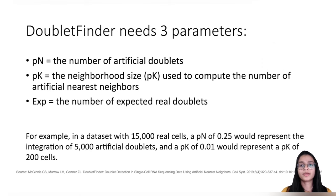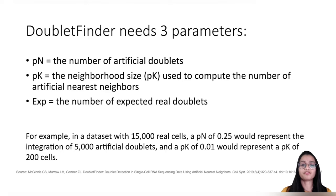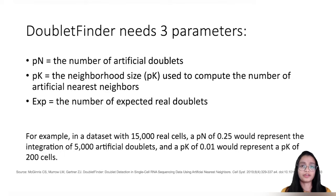The DoubletFinder algorithm needs three parameters to make doublet predictions: the number of artificial doublets (pN), a neighborhood size (pK) used to compute the number of artificial nearest neighbors, and the number of expected real doublets. For example, with a dataset of 15,000 cells, a pN of 0.25 means 5,000 artificial doublets, and a pK of 0.01 means a neighborhood size of 200 cells.